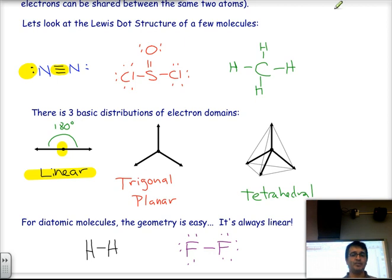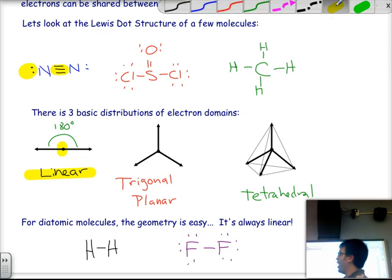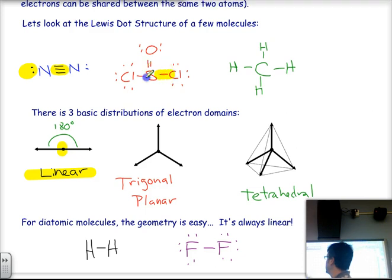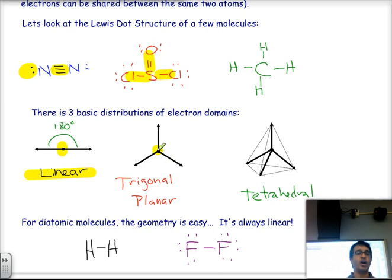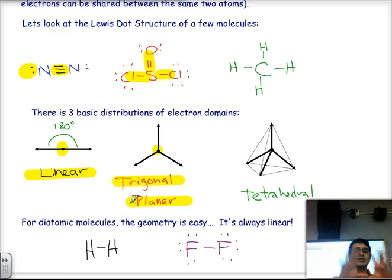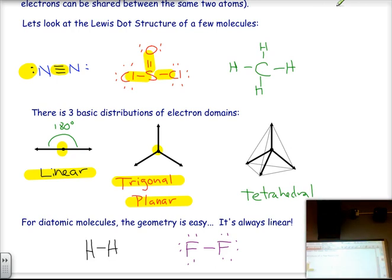If you have a molecule like the one in the center in red, you'll notice that around the central atom there are three directions in which electrons are present, and no lone pairs on the central atom. When we have three directions, we want to spread them out as far as possible, giving us what is called trigonal planar — all atoms and electrons spread out in the same plane — with an angle of approximately 120 degrees.